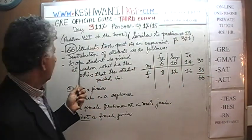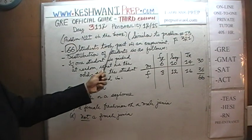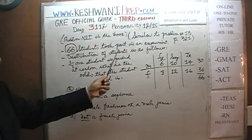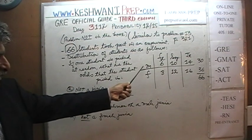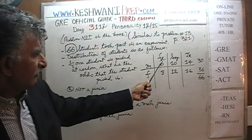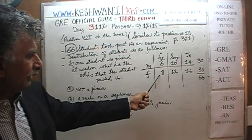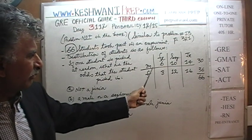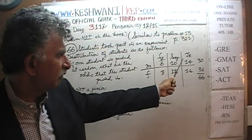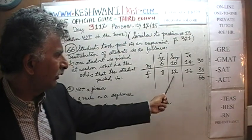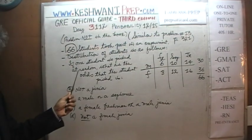The distribution of students is as follows: there are male and female columns, and rows for freshman, sophomore, and junior. Male freshmen: 6; male sophomores: 10; male juniors: 14. Female freshmen: 8; female sophomores: 12; female juniors: 16. That gives 30 males and 36 females, totaling 66 students.